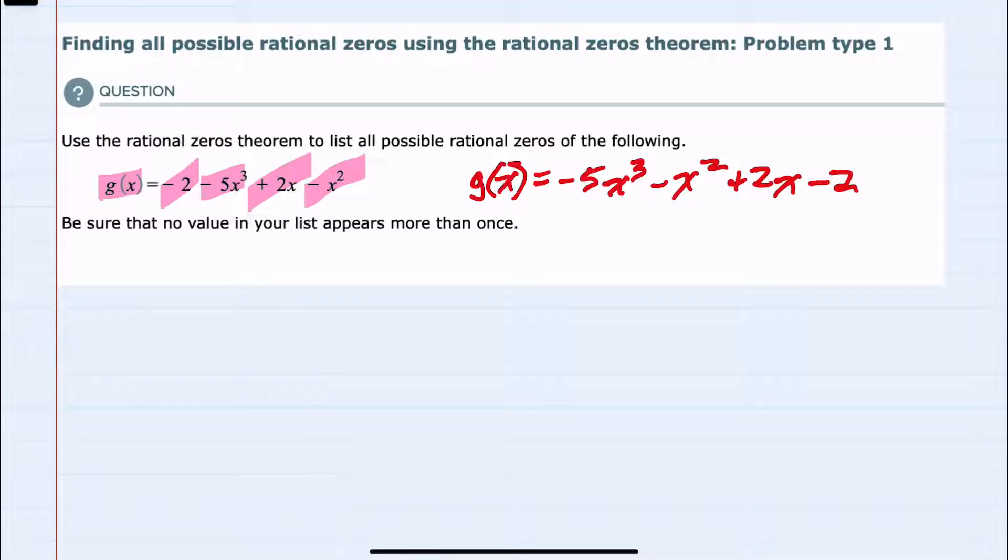Now that we have it in descending order, we can dig into the rational zeros theorem, which says that all possible rational zeros will be in the form of p/q, where p is all of the possible factors of that constant term, and q is all of the possible factors of the leading coefficient.